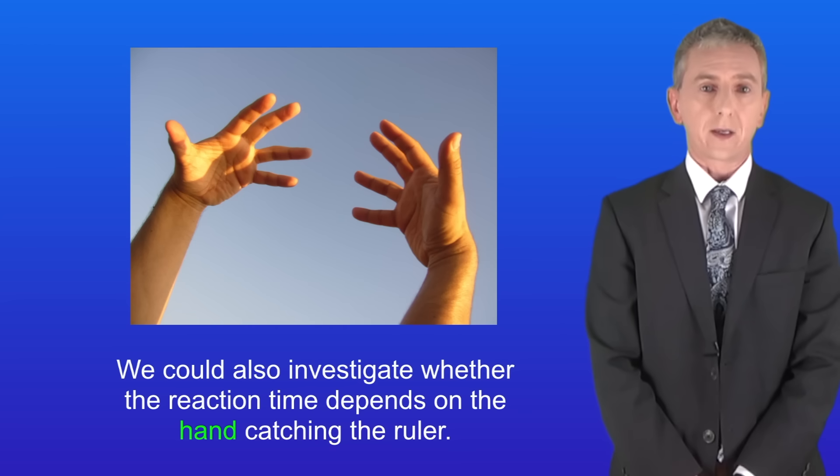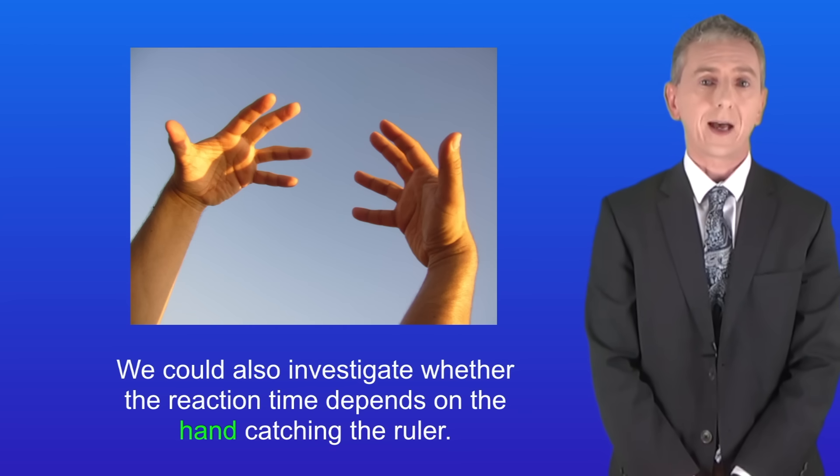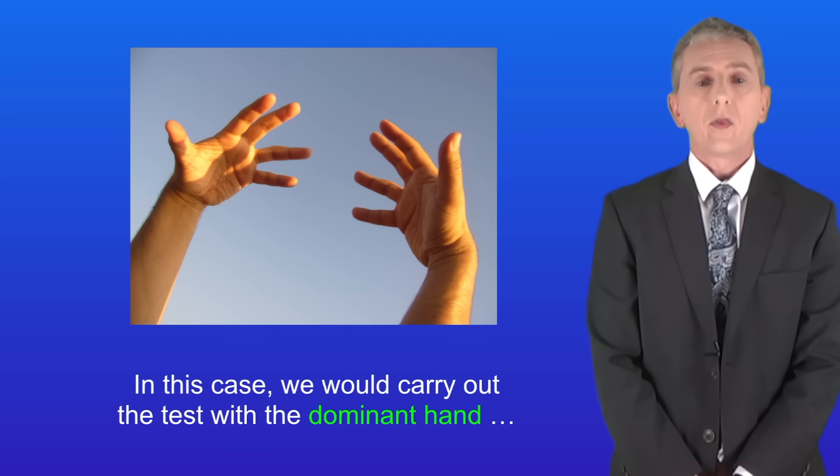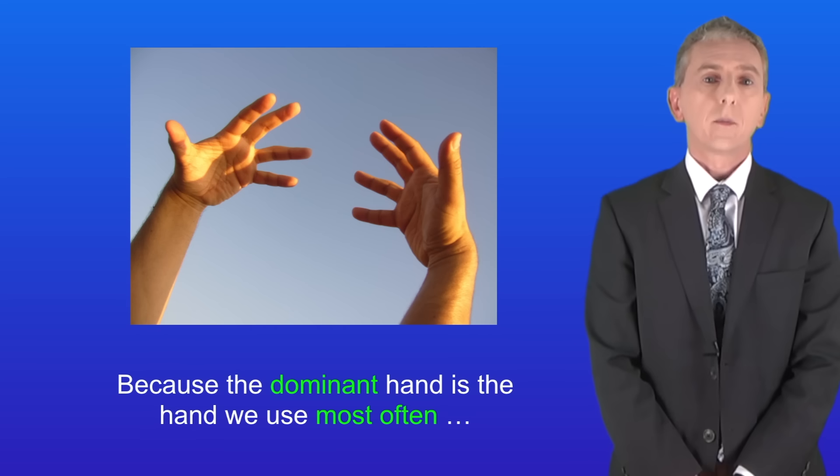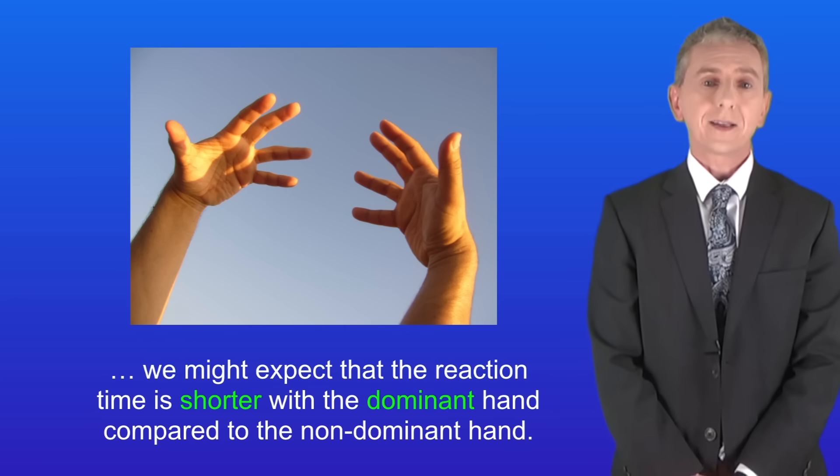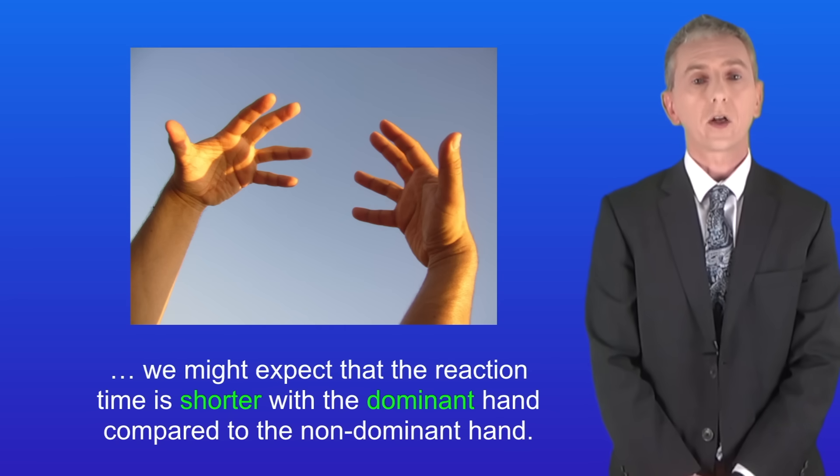We could also investigate whether the reaction time depends on the hand catching the ruler. In this case we would carry out the test with the dominant hand and then with the non-dominant hand of the same person. Because the dominant hand is the hand we use most often we might expect that the reaction time is shorter with the dominant hand compared to the non-dominant hand.